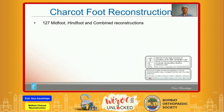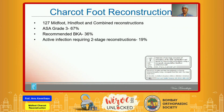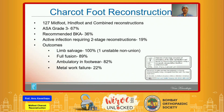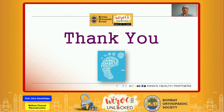Out of 127 midfoot, hindfoot, and combined midfoot and hindfoot Charcot reconstructions done at our institute, these patients had very high ASA grades, and a significant portion were recommended for below-knee amputation by the referring hospital. Twenty percent had active infection requiring a two-stage reconstruction. The outcomes so far are very good: limb salvage was achieved in 100% of patients, 89% of feet had full bone fusion, and 82% are ambulatory in footwear. Metalwork failure — breakage of screws and plates — is high in those treated with internal fixation, but this does not seem to affect the functional outcome.